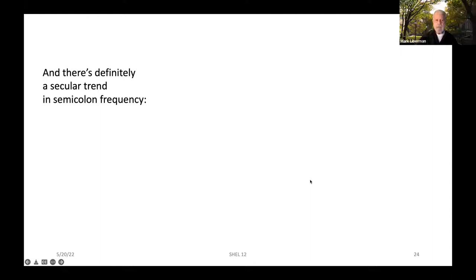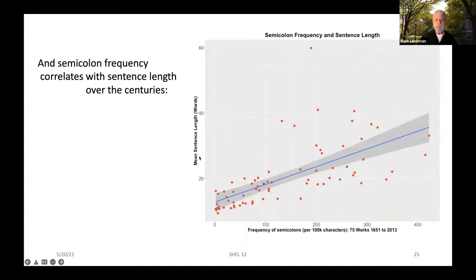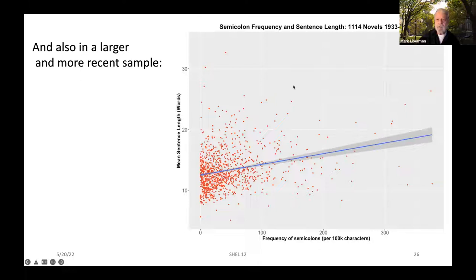There's definitely a secular trend in semicolon frequency. For the same 75 works from 1651 to 2013, the frequency of semicolons is notably decreasing over the years, again with a good deal of variation around the trend line. And over that period, semicolon frequency correlates with sentence length — one of the ways to make sentences longer is to take a couple of sentences and put them together with a semicolon in the middle. You can see the same kind of correlation in the larger, more recent sample: there's a trend toward longer sentence length with more semicolons.